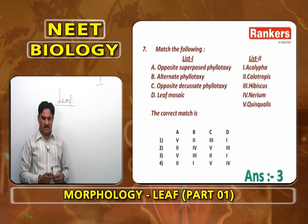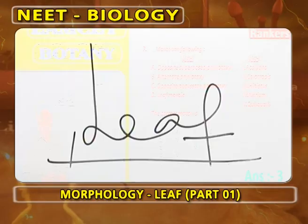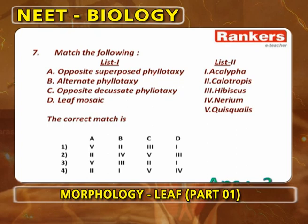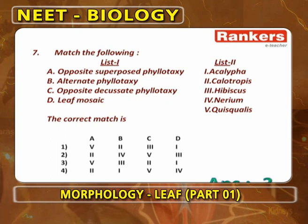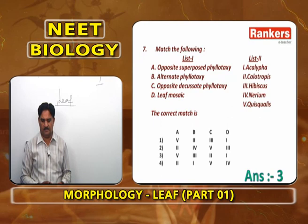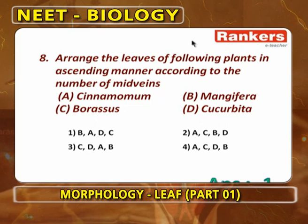Opposite superposed phyllotaxy is in Quisqualis, alternate phyllotaxy in Hibiscus, opposite decussate in Calotropis, leaf mosaic in Achillea. There is also whorled phyllotaxy found in Nerium, where more than two leaves are present at each node.